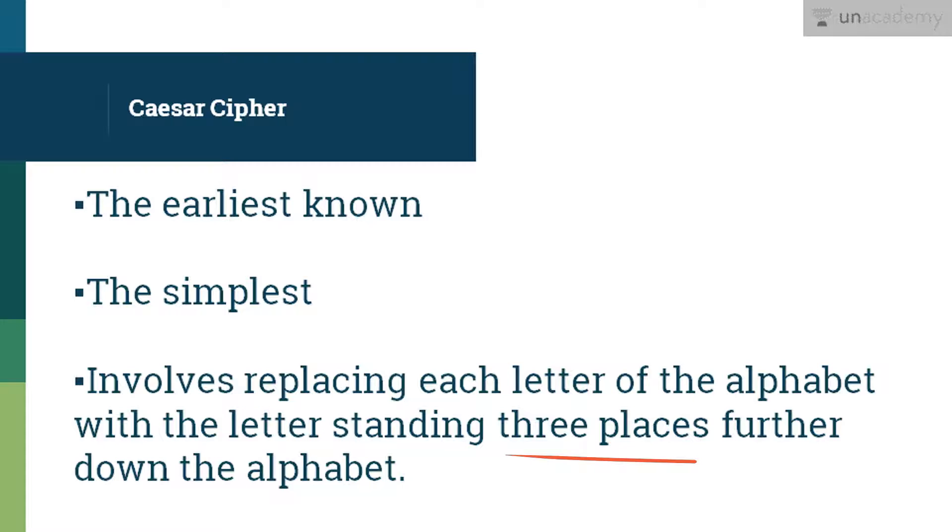So here the alphabet is wrapped around so that the letter following Z is A. Make a note of this because we often tend to make mistakes here while solving the problems.